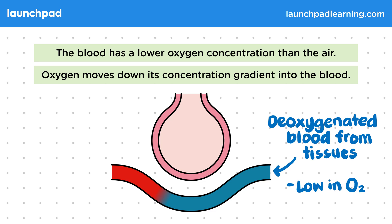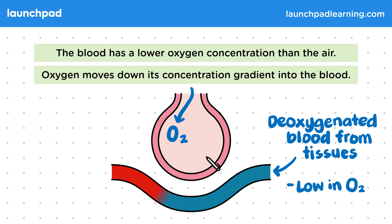Because the lungs are well ventilated, oxygen is going to move into the alveoli this way. In this part of the blood vessel there's going to be a concentration gradient between the oxygen inside the alveoli and the oxygen inside the blood.